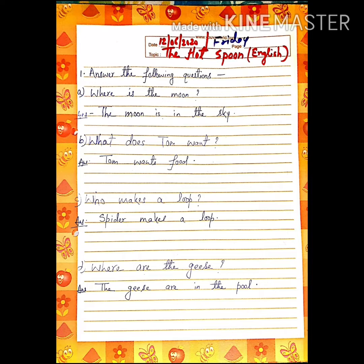See the sheet. Write down first the date, that is 12 of June 2020. And how will you write? 12 slash 06 slash 2020. And today is Friday.